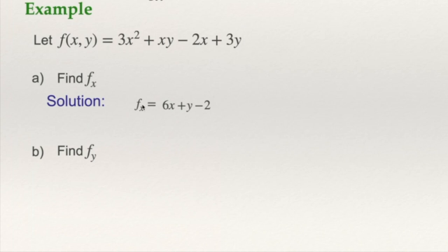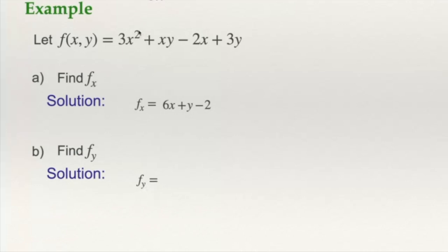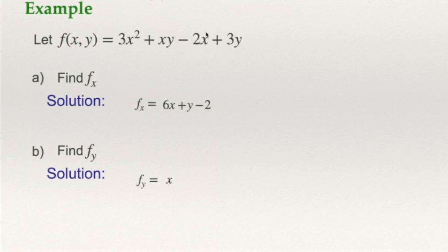If I want to find the partial derivative of f with respect to y, now x is a constant and y is the variable. The partial derivative with respect to y: the derivative of 3x² is 0, because there is no y there. But here, in the term xy, the derivative of y is 1, and x is a constant, so it will be x times 1, which is x. For -2x, there is no y, so the derivative is 0. And the derivative of 3y will be 3. So that is the partial derivative of f with respect to y.